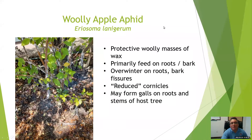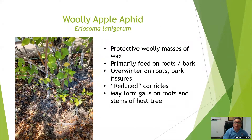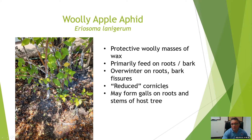Another type of aphid that is very common is the woolly apple aphid. On this slide it almost looks like a cottony fungal growth, but it's actually the protective covering of wax that this animal produces. This is an interesting animal in that it feeds on the roots as well as the above-ground portion of the tree. It overwinters on roots or bark fissures of the host tree. Unlike the green peach aphid, this animal has reduced cornicles that are very difficult to observe, and one result of its feeding damage is that they form galls on the roots and stems of the tree.